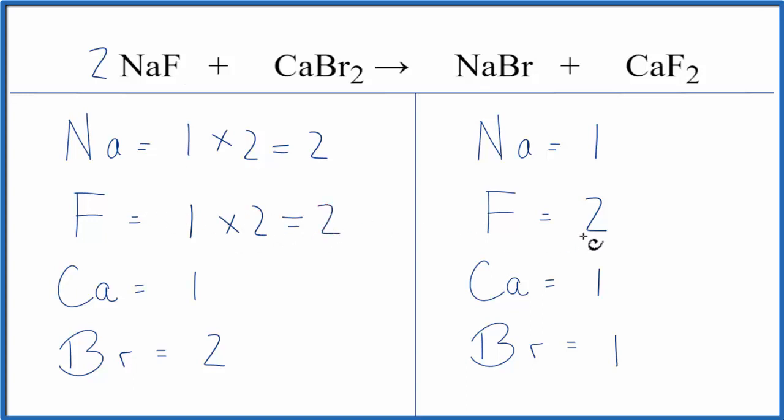So the fluorines are now balanced but the sodiums and bromines aren't. We could fix the sodium by putting a 2 in front of the NaBr. This 2 applies to everything. So 1 times 2, now the sodiums are balanced.